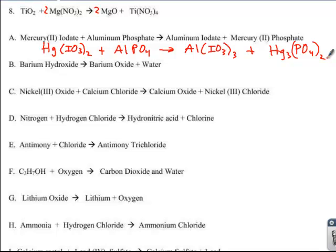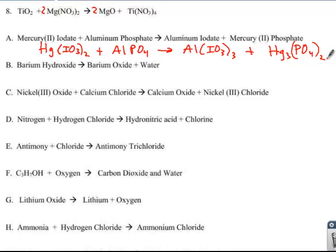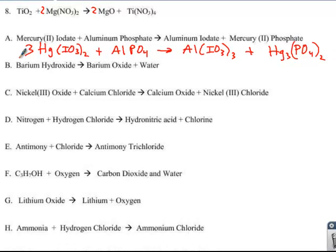You've got to get that down, get it down to less time and less time. Otherwise, this is going to start to become a bit overwhelming. Alright, so I'm going to start with mercury. I'm going to put a 3 there to balance the Hg's. That means I need a 2 there to balance the IO3's. That gives me two Als, two Als, and then that phosphate is balanced.